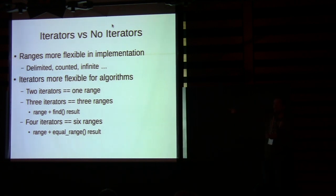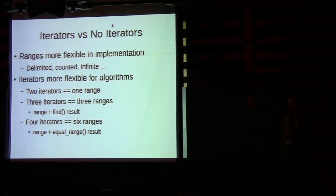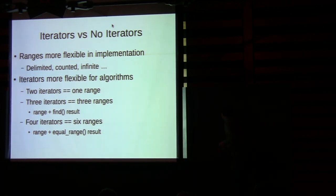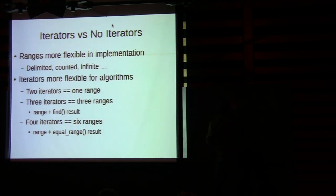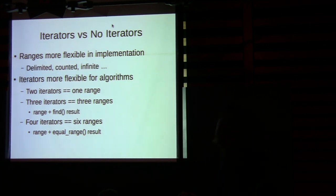Iterators are more flexible for algorithms. Two iterators give you one range. Three iterators give you three ranges: first to last, first to middle, middle to last. With four iterators from equal_range plus the original pair, you have six ranges that you can form from them.